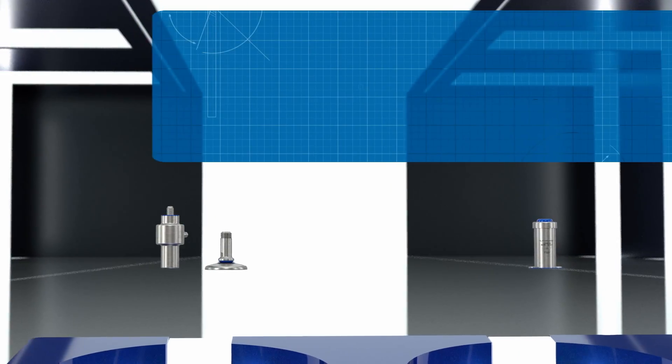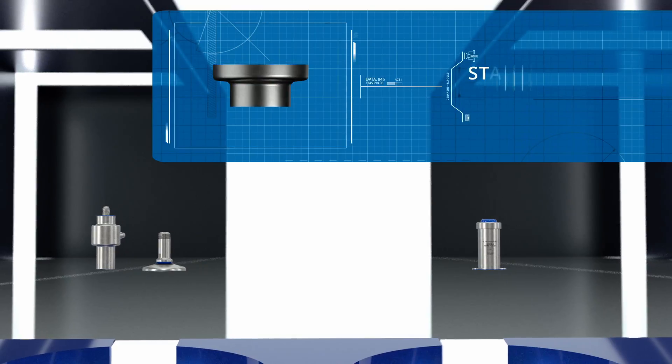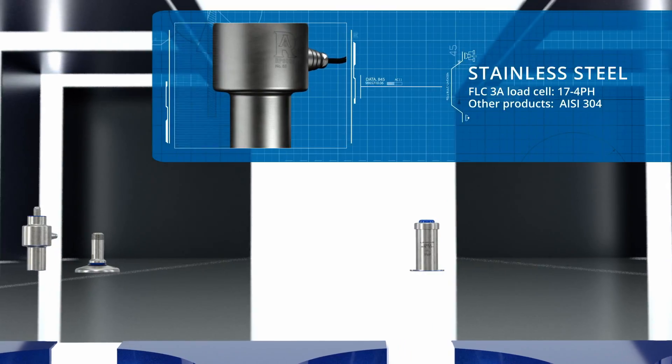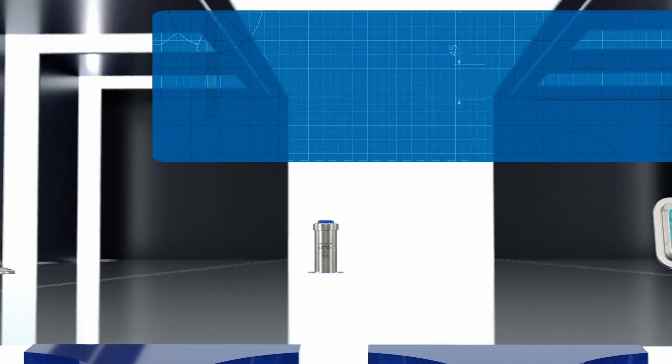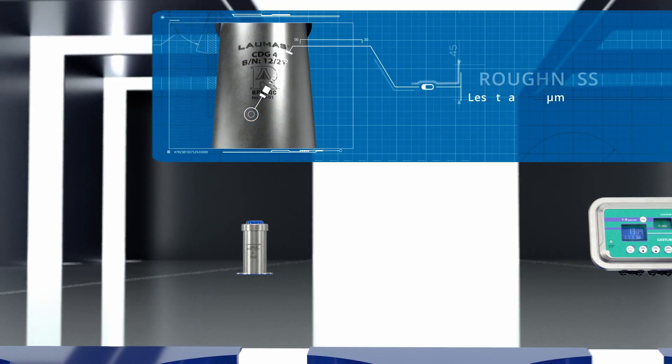A series of basic characteristics unites the products in the range and certifies them in accordance with the 3A standard. They are made from stainless steel, an ideal material for hygienic applications, corrosion-resistant, non-toxic, and non-absorbent.